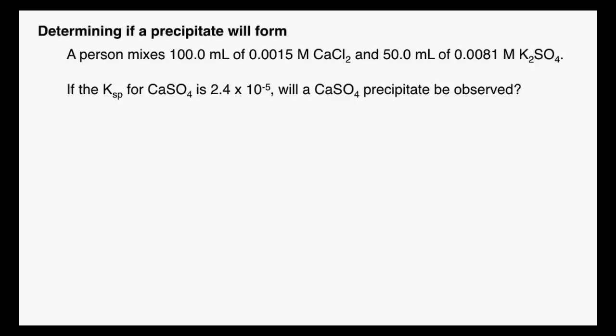So let's take a look at this. We're given two things that are being mixed. A person mixes 100 milliliters of 0.0015 molar calcium chloride and 50 milliliters of 0.0081 molar potassium sulfate. And we want to know if calcium sulfate is going to precipitate out. It gives us the Ksp. And there's a lot of ions going here, but really the only thing we're interested in is calcium and sulfate. The calcium is going to come from this. The sulfate is going to come from this.